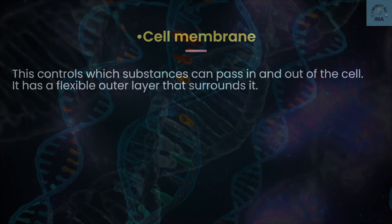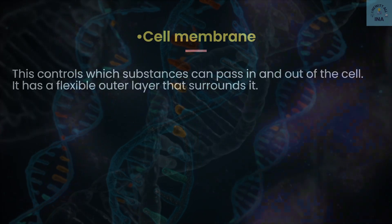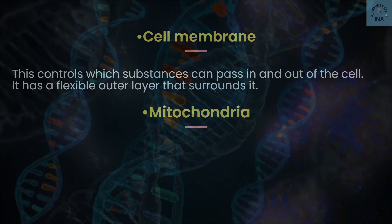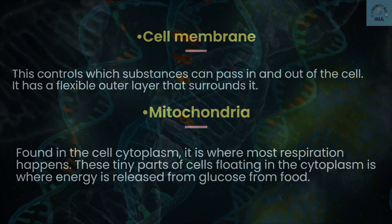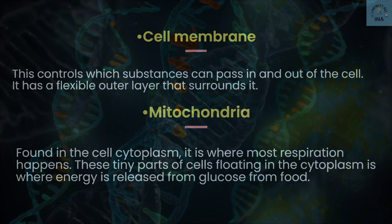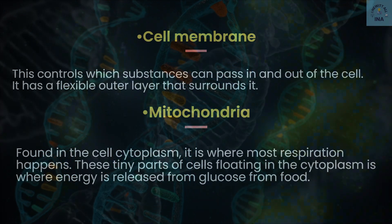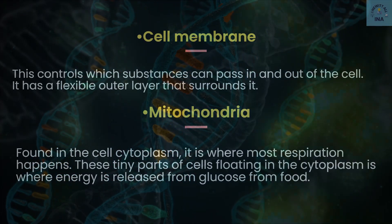Mitochondria: found in the cell cytoplasm, it is where most respiration happens. These tiny parts of cells floating in the cytoplasm is where energy is released from glucose from food.